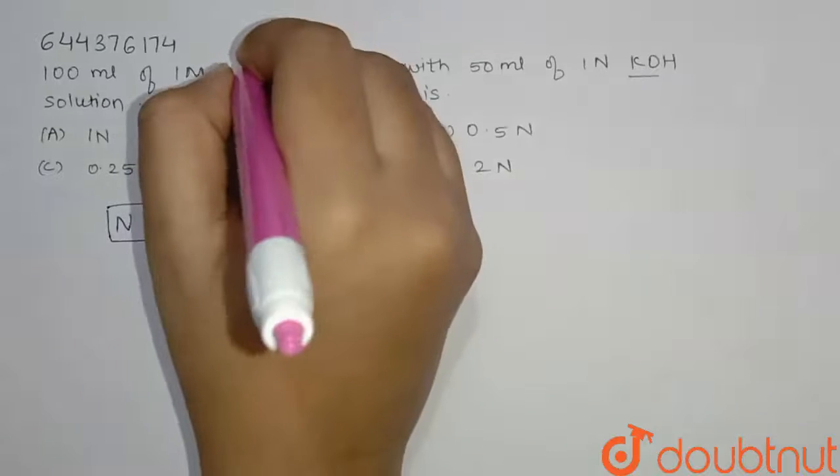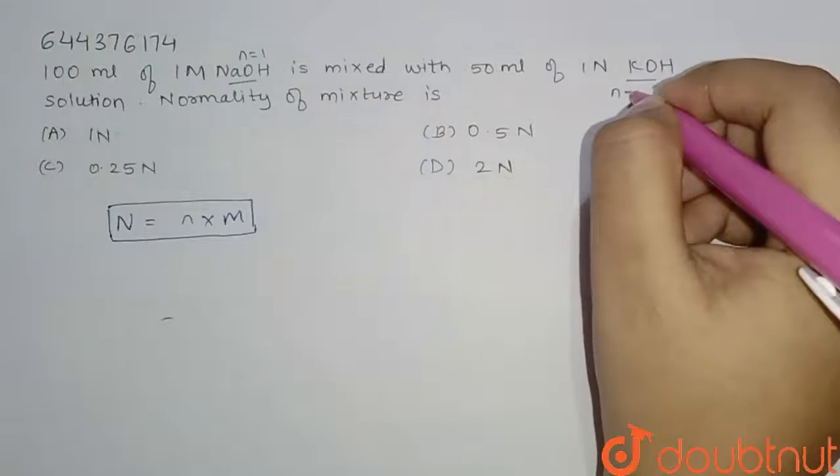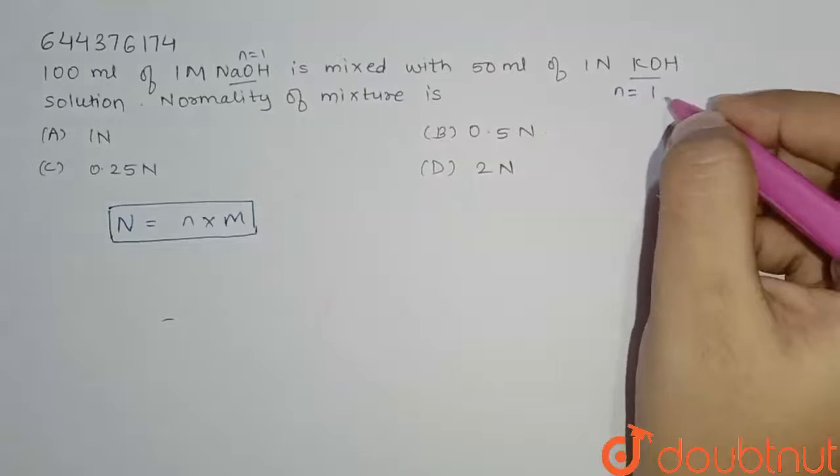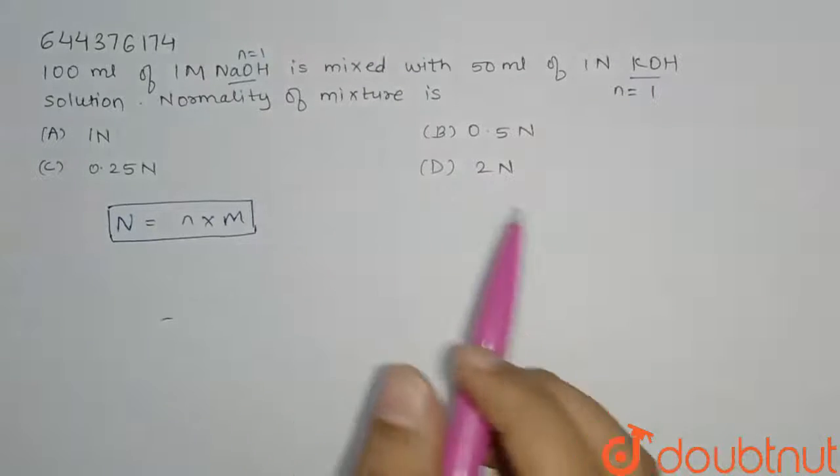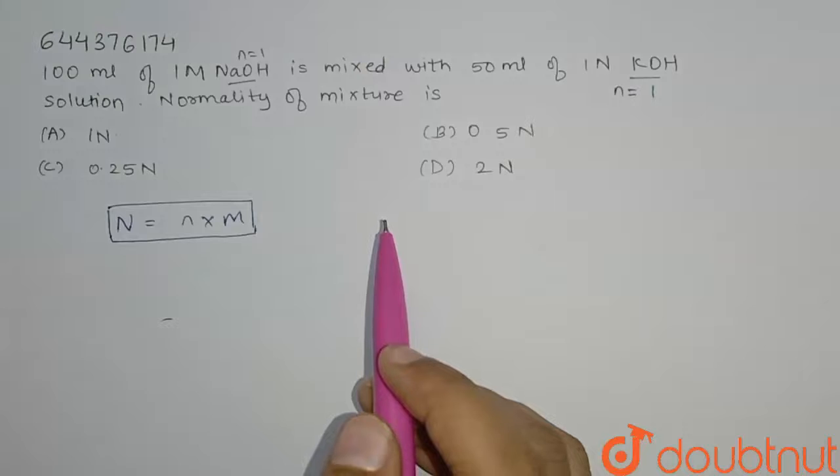If we see here in question, here n equals 1 and here also it is n equals 1 because it is only 1 molecule. So now, if our n equals 1, then our normality will directly be equal to M.